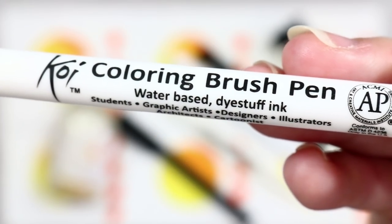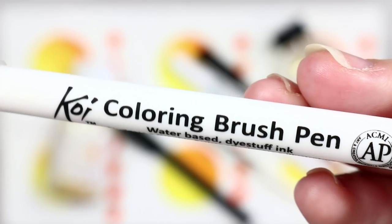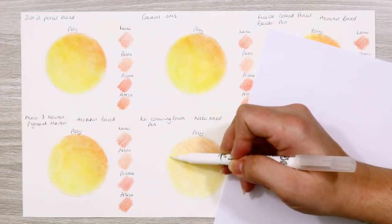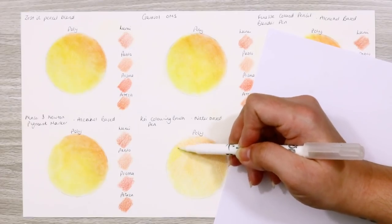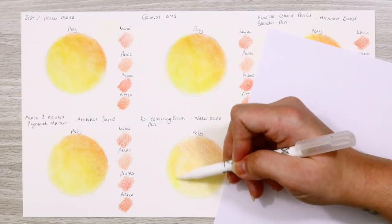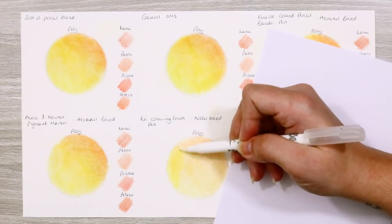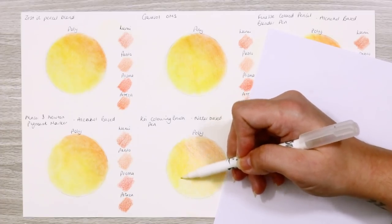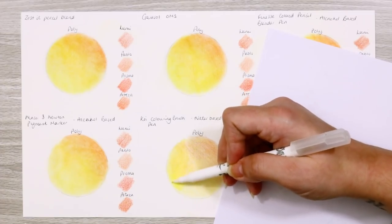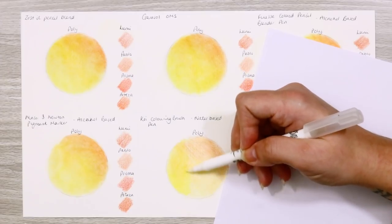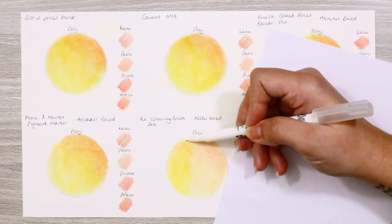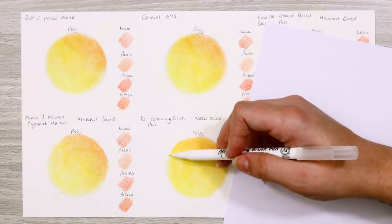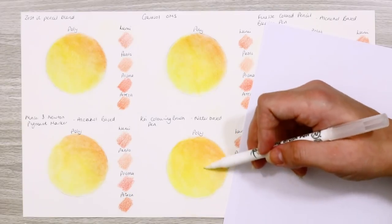Moving on to our only water based blender, the Koi coloring brush pen. This just has the one applicator, a super soft brush tip which is so nice to use. Again I use the same motion and process of applying this product. This didn't do too bad a job but it could have been better. It worked so well on the Arteza pencils though, which completely surprised me. It didn't do too much on the Luminance and it looks like I basically went over and applied nothing. I put this down to the waxy nature of the Luminance and the other wax based pencils as well.